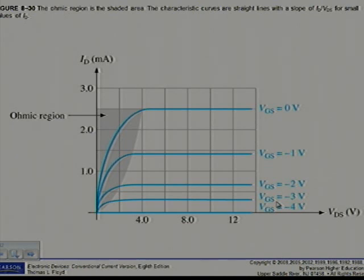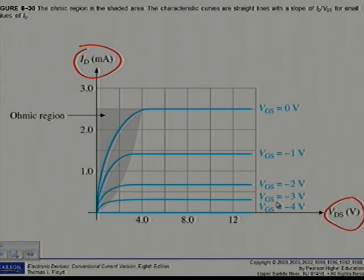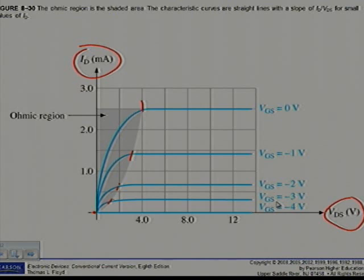If we look at figure 8.30, you can see the ohmic region is in the shaded area. The characteristic curves are straight lines with a slope of ID divided by VDS. For small values of ID, the ohmic region extends from the origin of the characteristic curve to the breakpoint where the active region begins, forming a roughly parabolic shape as shown on the typical set of curves in figure 8.30.